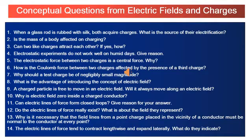The dielectric constant of the medium may be defined as the ratio of the force between two charges placed some distance apart in free space to the force between the same two charges placed in that medium at the same distance. So we can write: F_medium = F_vacuum / k. Note that the dielectric constant of vacuum is always 1, the dielectric constant of air is approximately 1.00054, and the dielectric constant of water is 80.